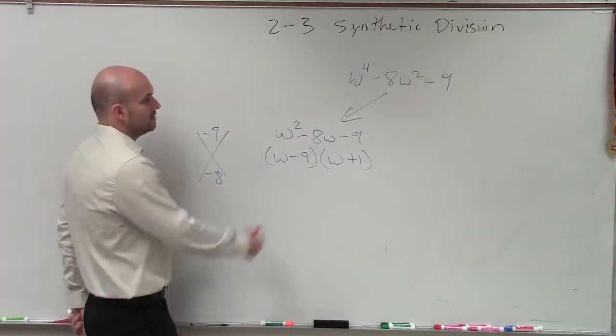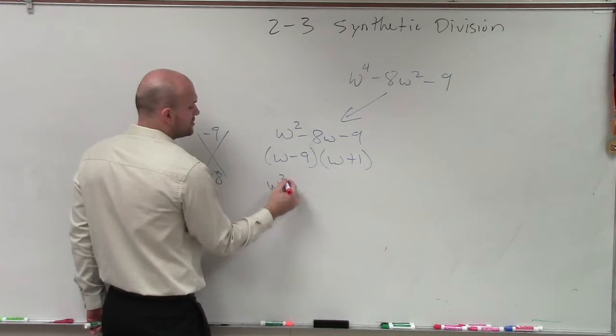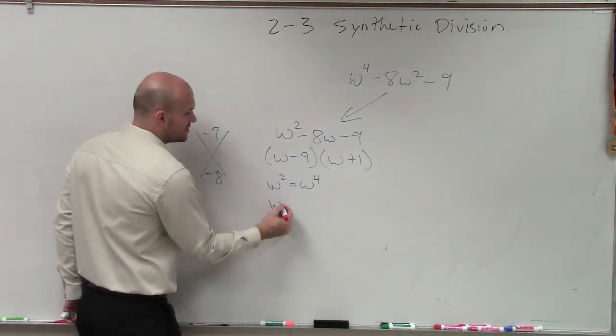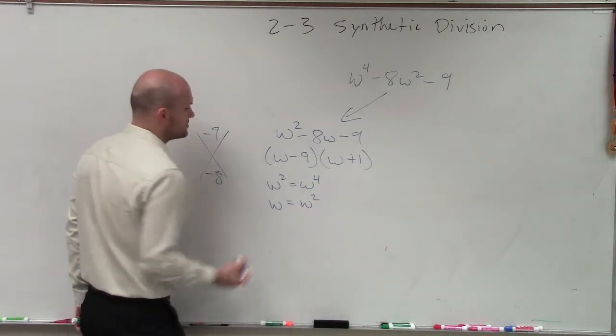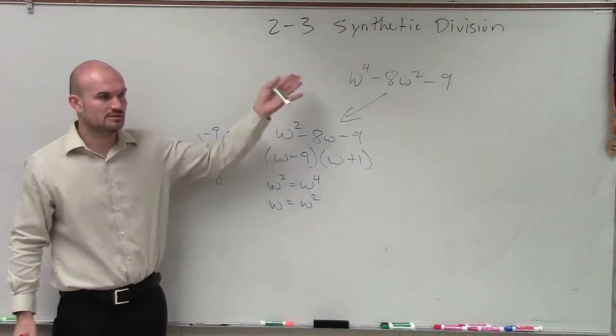But I could say, well, these are kind of the same thing. I could say, well, w squared equals w to the 4. Therefore, w is going to equal w squared. Would you guys kind of agree to that?